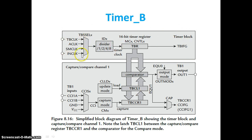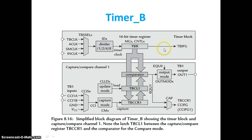In the timer block, in terms of clock sources and the divider source, everything is the same. In terms of TBR, it is also a 16-bit timer register and it has a Timer B interrupt flag. As you know, it is going to be generated when the counter goes to zero. There is an extra bit called CNTLX.